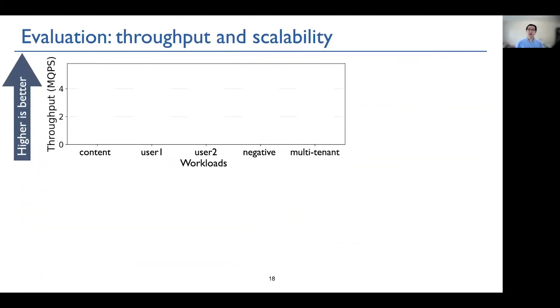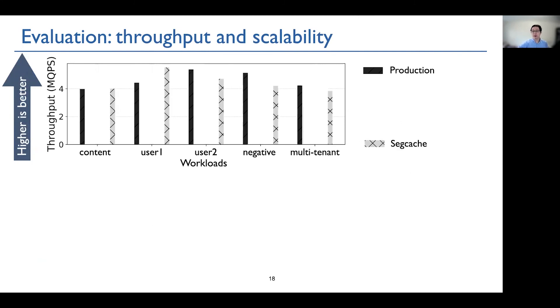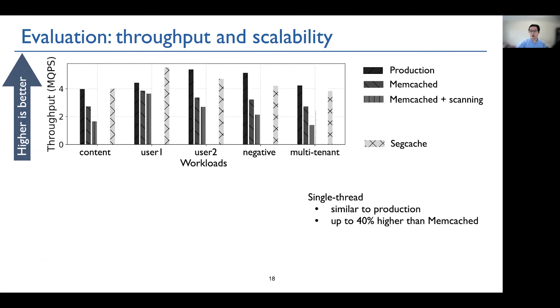Now, in terms of throughput and scalability, this figure shows single-thread throughput. It is the higher, the better. We observe that compared to production, Segcache has similar throughput. Well, compared to memcached and research system, Segcache has significantly higher throughput.